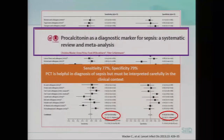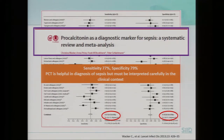There are several studies. This meta-analysis and systematic review of many studies on procalcitonin in the diagnosis of sepsis shows that it has a sensitivity of 77% and specificity of 79%. So PCT is helpful in the diagnosis of sepsis. However, it must be interpreted carefully within the clinical context.